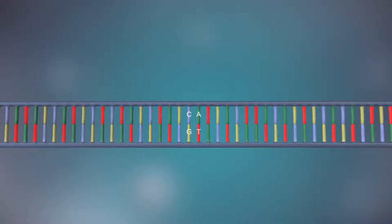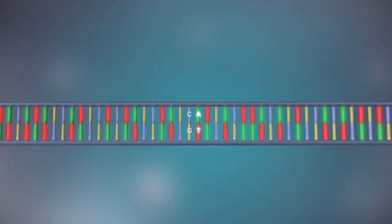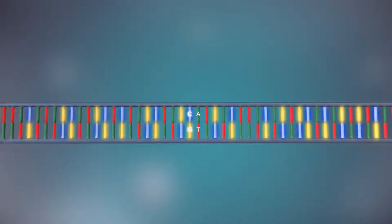The two strands are complementary. This means that wherever there's a T in one strand, there will be an A in the opposite strand, and wherever there's a C, there will be a G in the other strand.